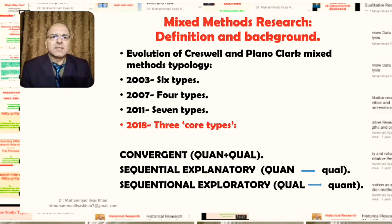seven types in 2011, and the current one, which is the three core types in 2018. These three core types include the convergent design, which is qual plus quant, the sequential explanatory design, and the sequential exploratory design. Let us now discuss these three briefly.